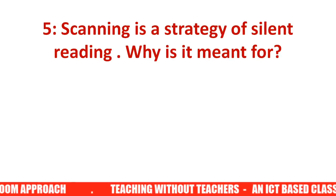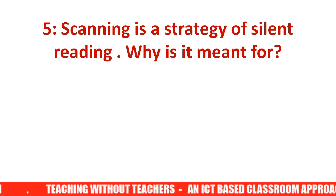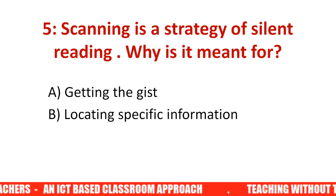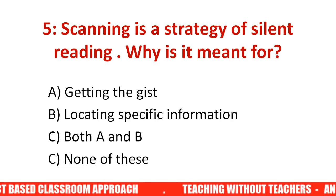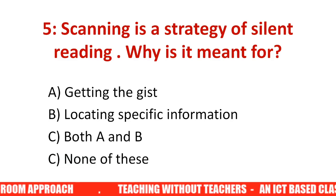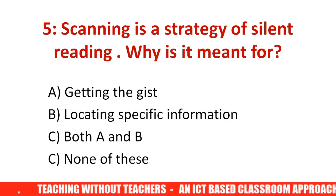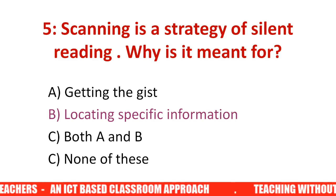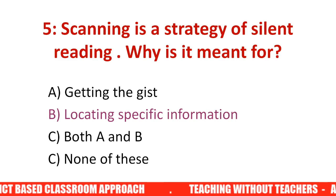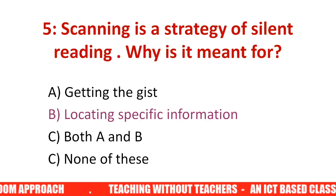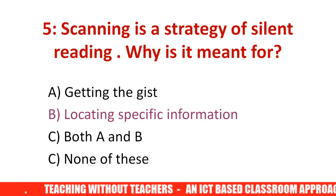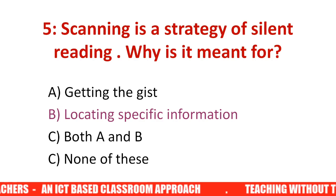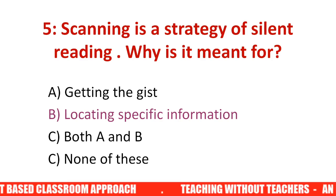Question number five: Scanning is a strategy of silent reading. What is its purpose? Options are: A) getting the gist, B) locating specific information, C) both A and B, D) none of the above. The answer is B — locating specific information. For example, when you are at a railway station looking for your name on the reservation list, or finding a phone number in a telephone directory — you are scanning for specific information.